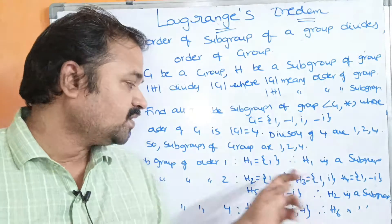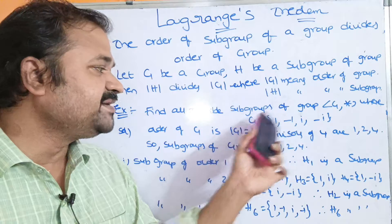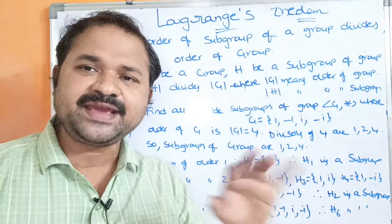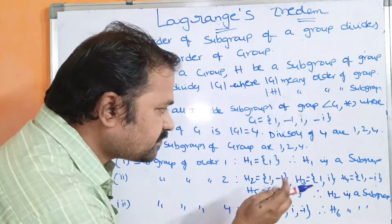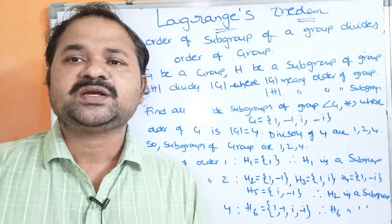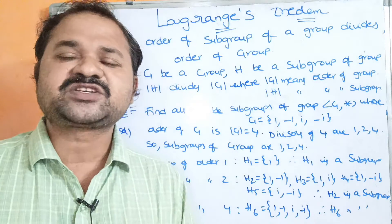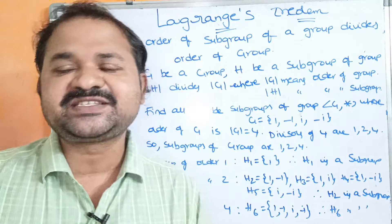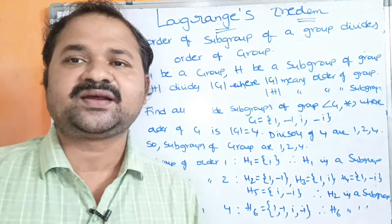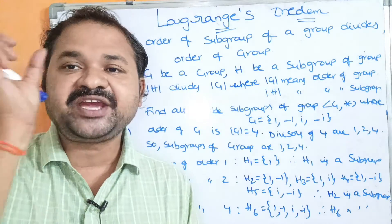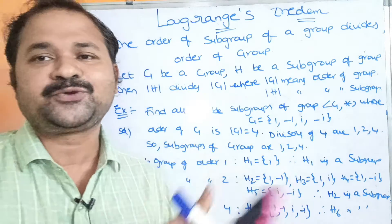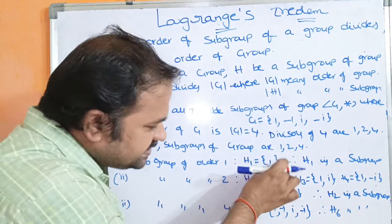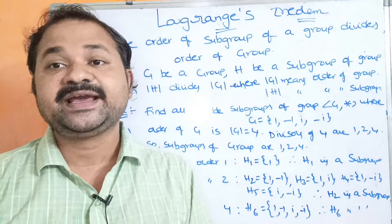H1 equals {1}. Here H means subgroup. We are finding subgroups of order 1, so we take only one element. H1 satisfies the four properties of a subgroup: closure, associative, identity element, and inverse element. So H1 is a subgroup. If there are any doubts regarding subgroups, please refer to my previous video — I will share that link in the description.